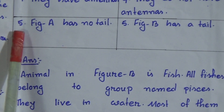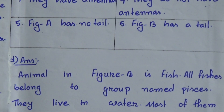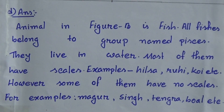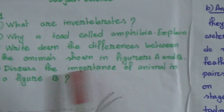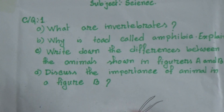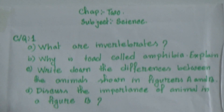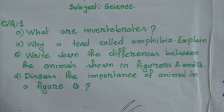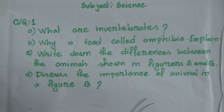In figure A, there is no tail, but in figure B, it has a tail. Now, Question D: Discuss the importance of the animal in figure B. You have to discuss the importance of the animal shown in figure B.